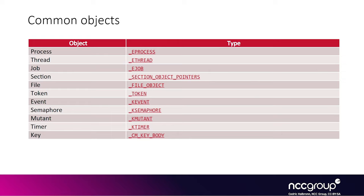Common objects you'll typically encounter include EPROCESS and ETHREAD, but a very important one is the token — you'll always deal with it in local kernel exploitation. You often want to find a high-privilege token in memory and patch a pointer in your own EPROCESS structure to point to that stolen token, elevating your process's privileges. Other objects include semaphore and mutant — mutant is the Windows terminology for a mutex — related to synchronization. For most of these, you don't need to study them in advance; use something like WinDbg to learn about them when you actually run into them.